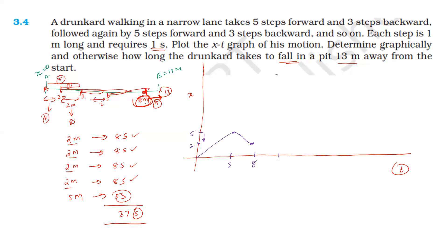Starting to plot key points: at 5 seconds the drunkard is at 5 meters. Then 3 steps back, so at 8 seconds the position is 2 meters. Then 5 steps forward again: at 13 seconds the position is 7 meters. Then 3 steps backward: at 16 seconds the position is 4 meters. So we plot points (5, 5), (8, 2), (13, 7), (16, 4).